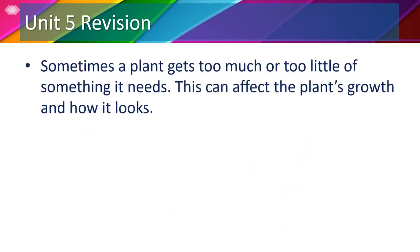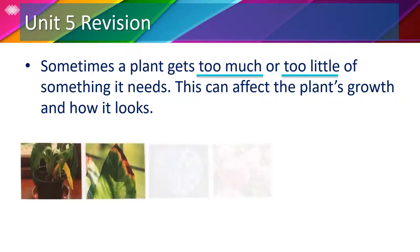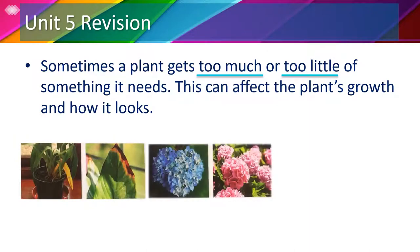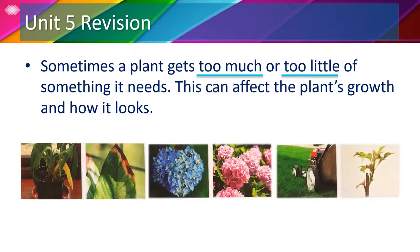We now know that sometimes a plant gets too much or too little of something it needs. This can affect the plant's growth and how it looks. For example, too much sunlight, a change in nutrients in the soil, or even cutting plants too short can all affect how a plant grows.